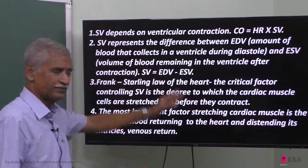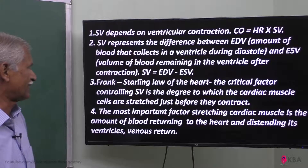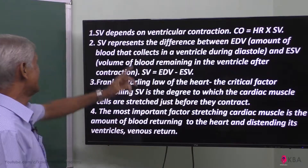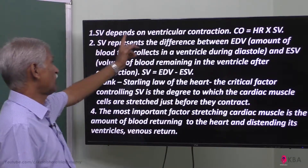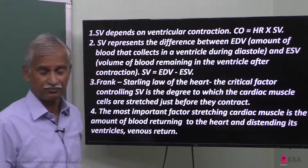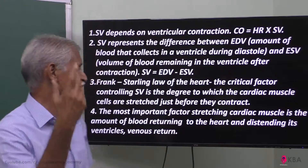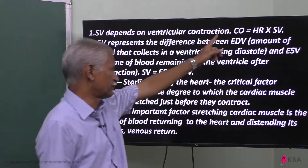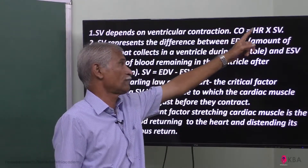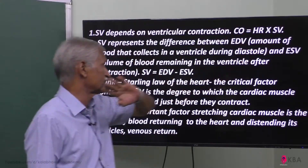The stroke volume depends on ventricular contraction. So, cardiac output is equal to heart rate multiplied by stroke volume.